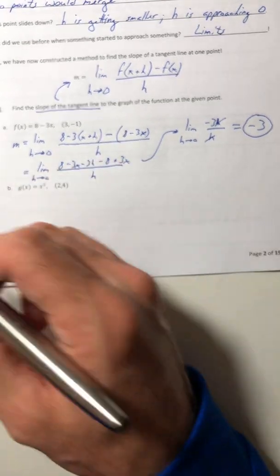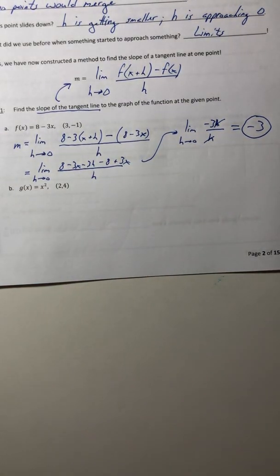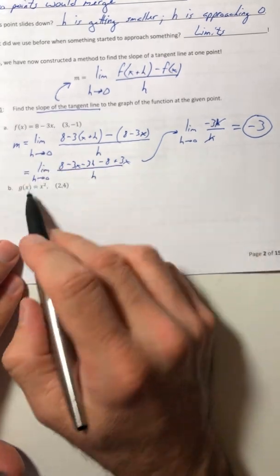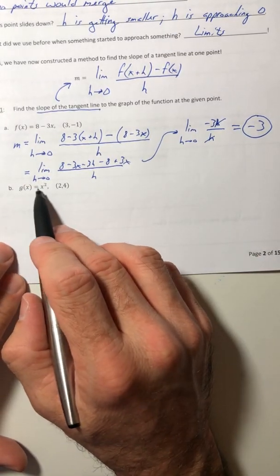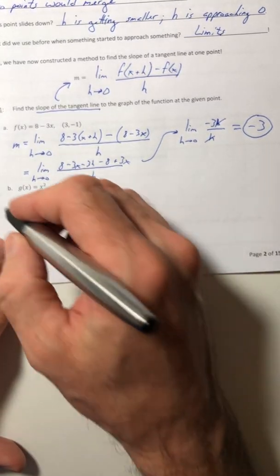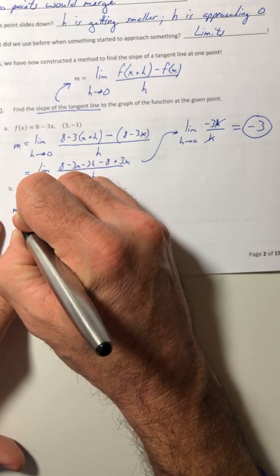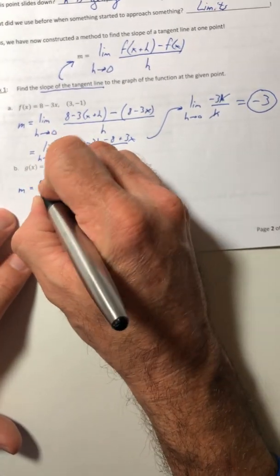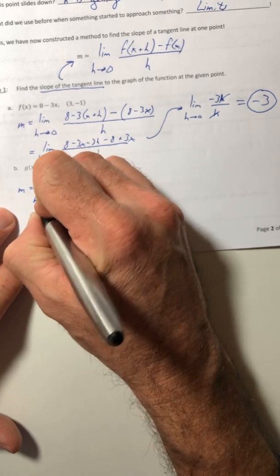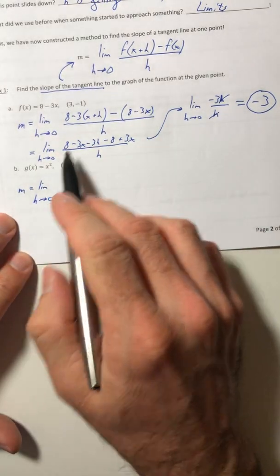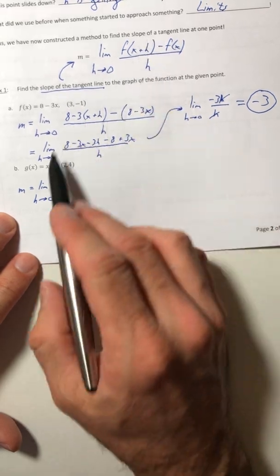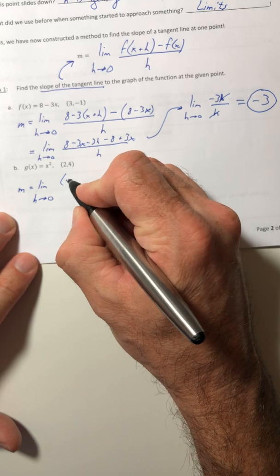Okay, so this is why we did all that limit stuff in Chapter 2, in the previous chapter, because it's going to come back in this one. Alright, part b - we've changed the function, but it's not going to change what we do though. So take the limit, so h goes to 0. So now it's g of x plus h, so the x plus h goes in for x, so that means it's going to be squared.